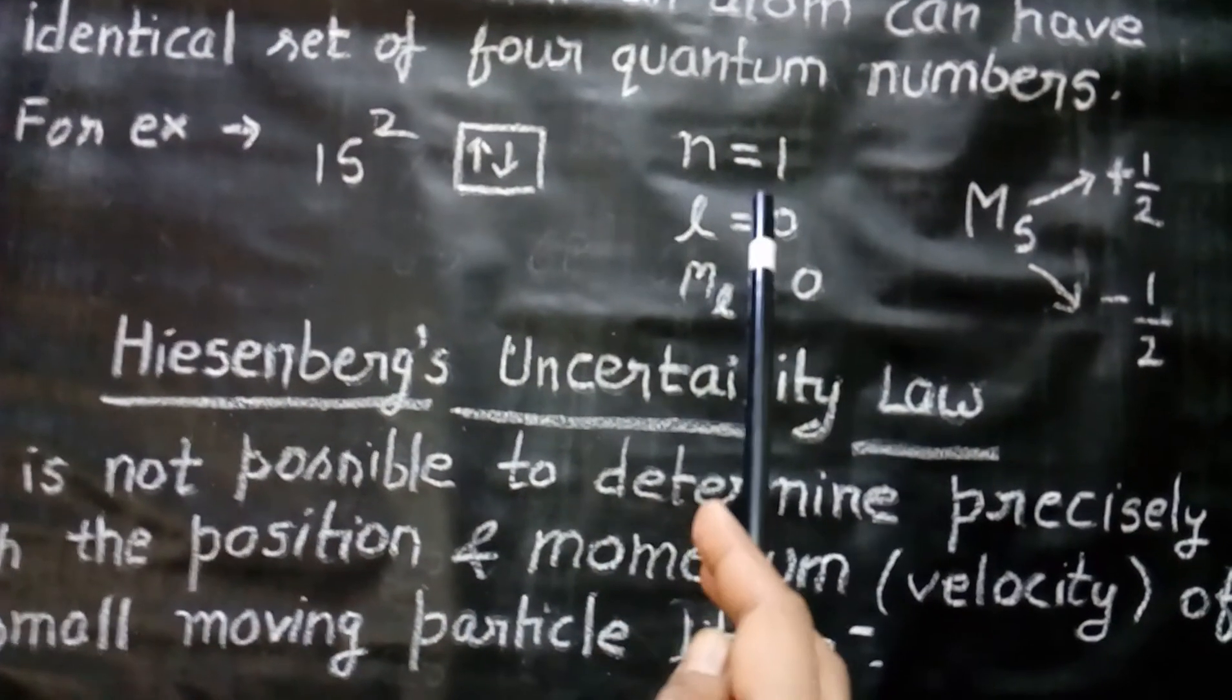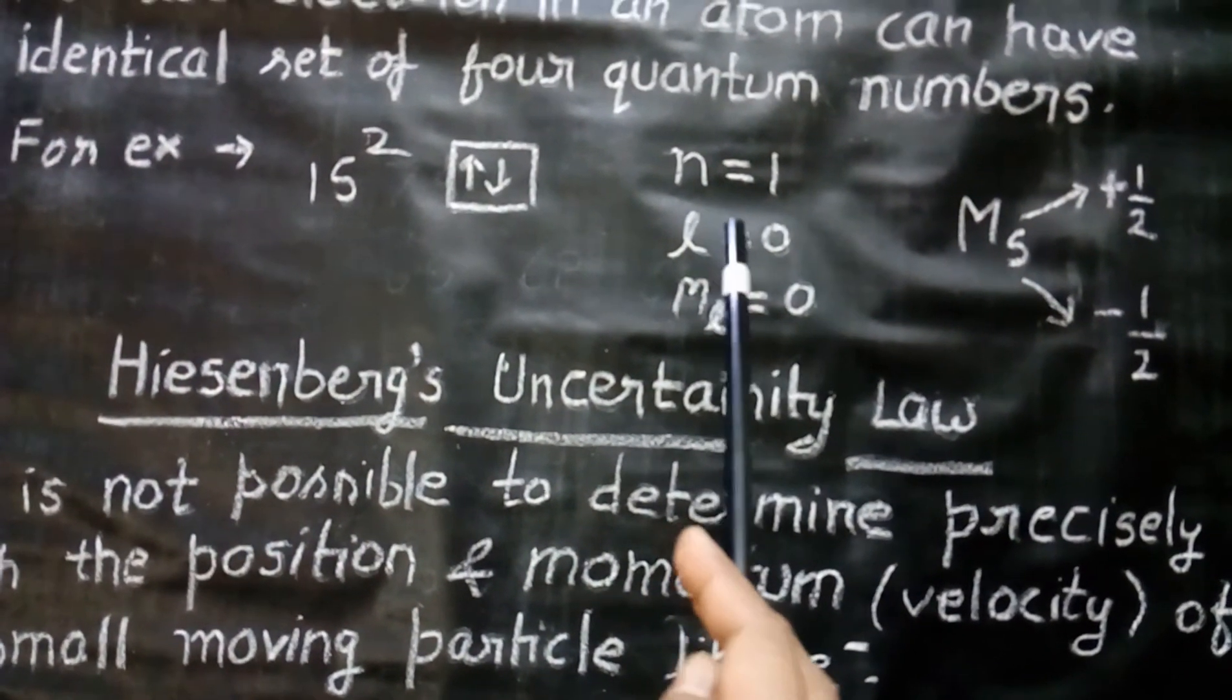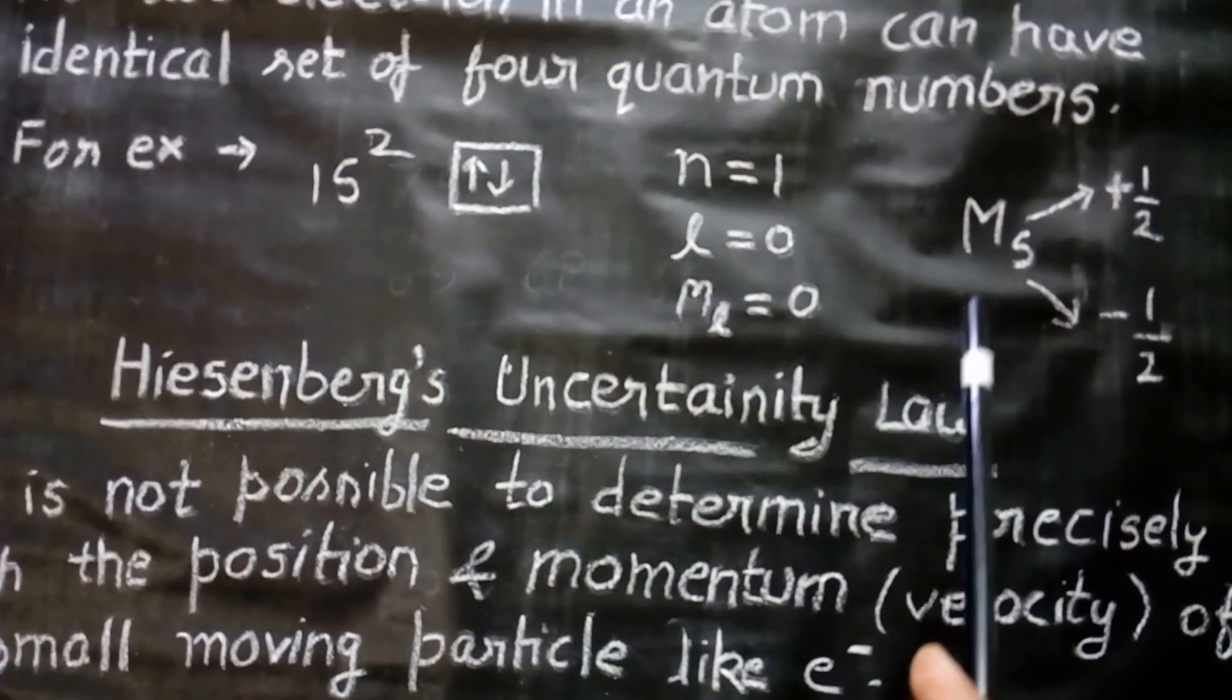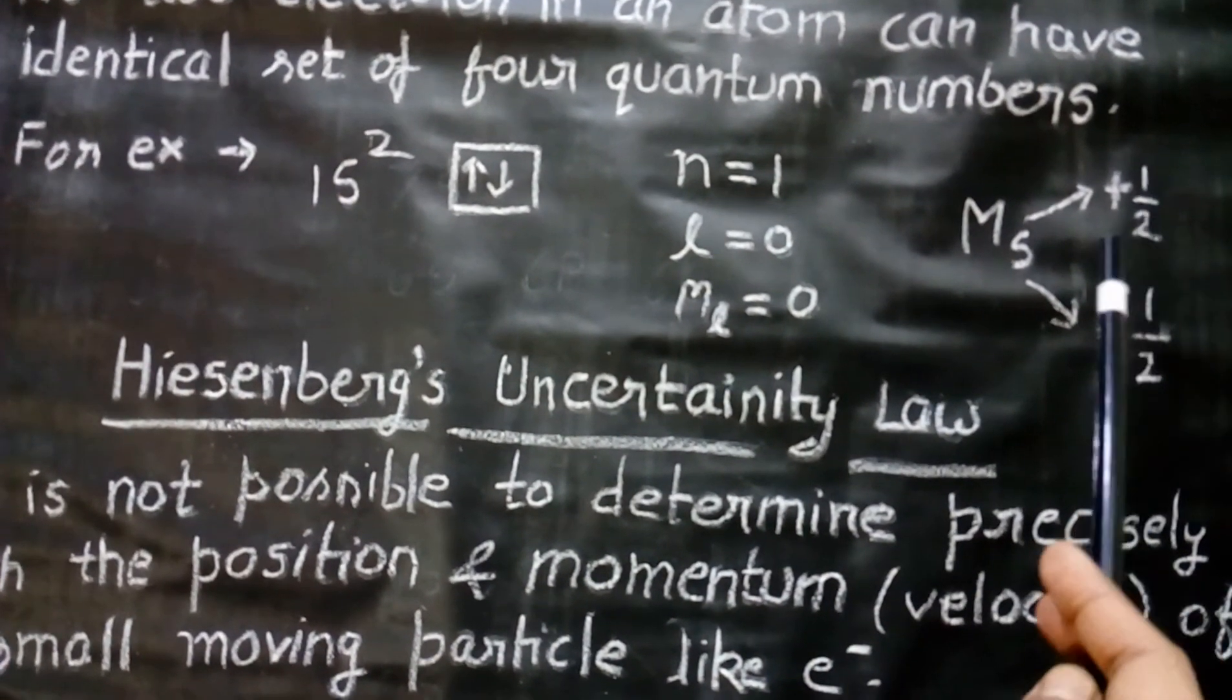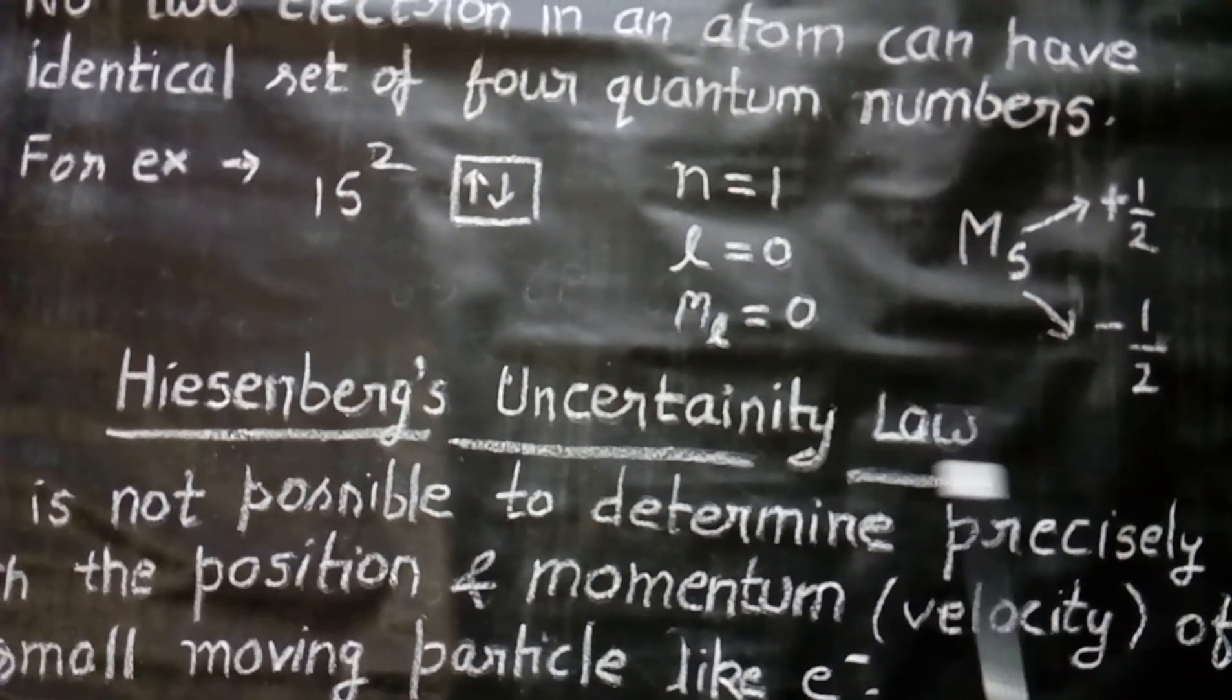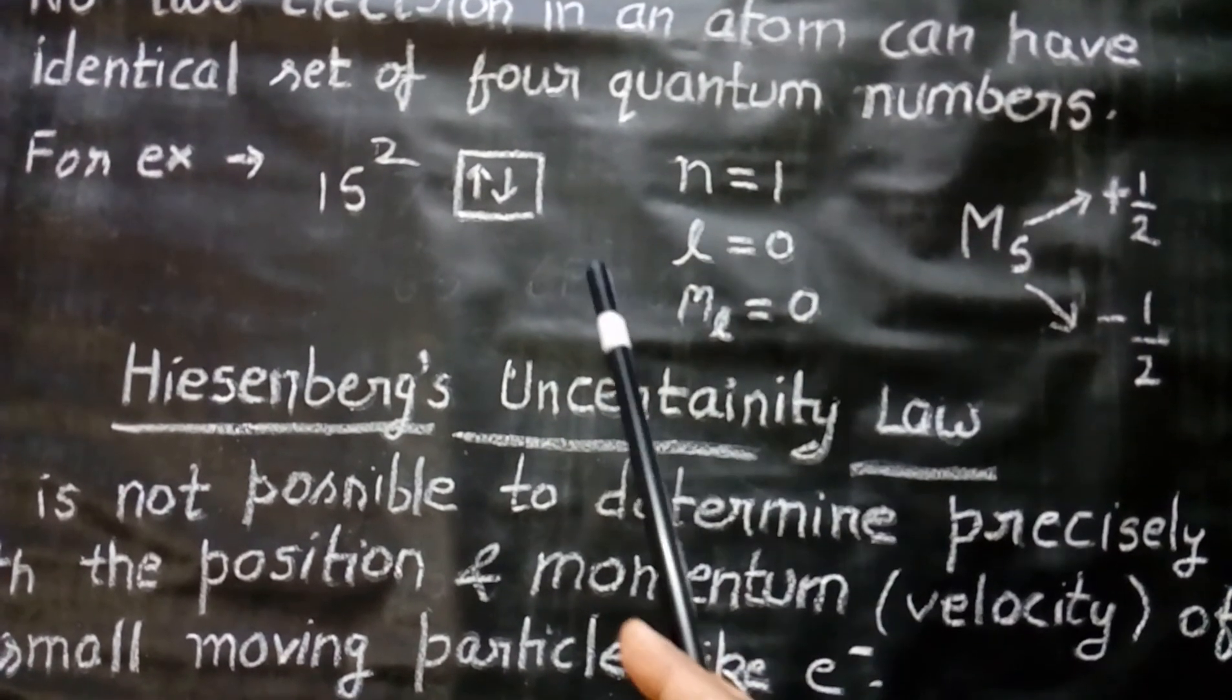So, for the 2 electrons, n is 1, l is 0, and ml is 0. These 3 quantum numbers are same. Then, the spin quantum number is different. It is plus half for the 1 electron and minus half for the another one. So, we see the 4 quantum numbers are not same for the 2 electrons.